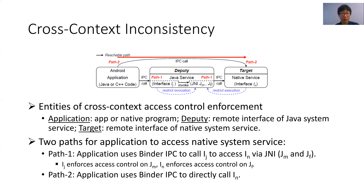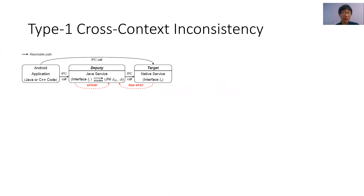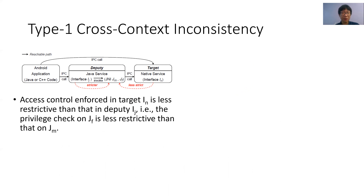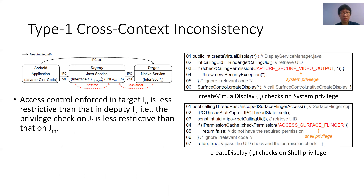For path 2, the application uses IPC to call IN directly, and IN also enforces access control to restrict itself from being called by the application. This figure illustrates the type 1 cross-context inconsistent access control enforcement. The access control enforced in the target IN is less restrictive than that in the deputy IJ — that is, the privilege check on GF is less restrictive than that on GM. The code snippet shows a real case of type 1 cross-context inconsistency. The deputy IJ is the interface createVirtualDisplay of display manager service, and the target IN is the interface createDisplay of SurfaceFlinger service.